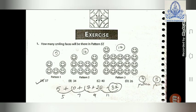Exercise, question 1: How many smiley faces will be there in pattern five? Three patterns are given. In pattern one, there are five smiley faces; in pattern two, ten smiley faces; in pattern three, seventeen smiley faces. We have to find pattern five. Looking at the differences: five to ten is five, ten to seventeen is seven.